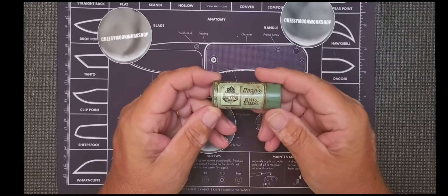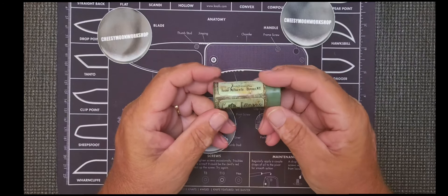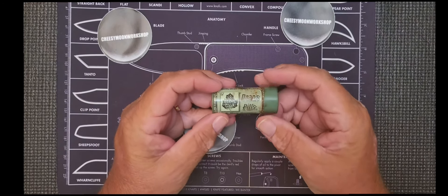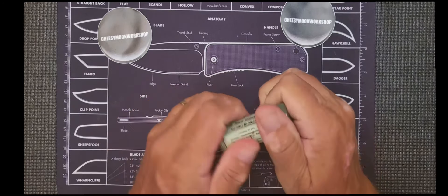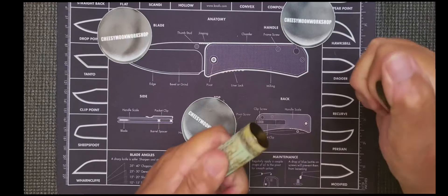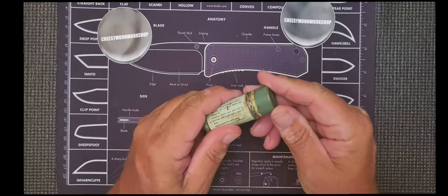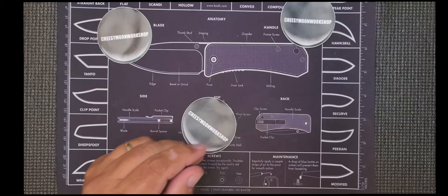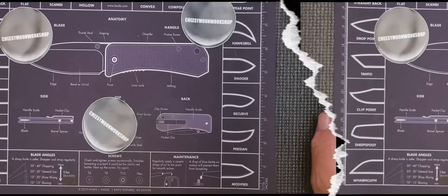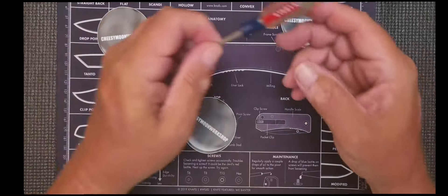The other item was just a little pill tin for Dones pills. Nothing spectacular, nothing fancy. Got a little bit of rust on it, but just a neat little container. I can put some matches in or some fire tender or something for camping, or just hang on to it as a cool little box.